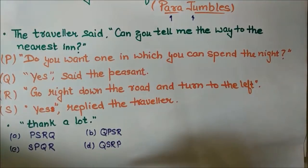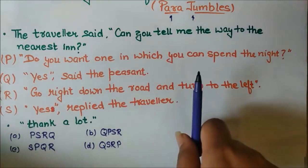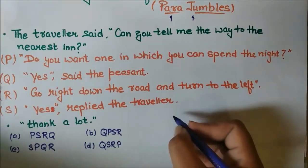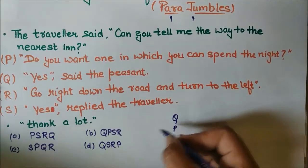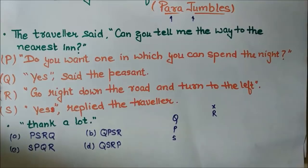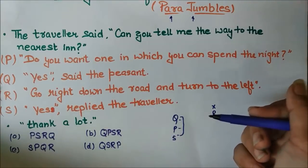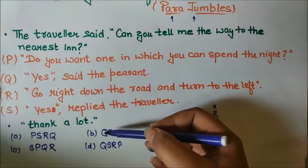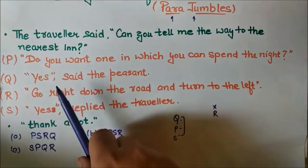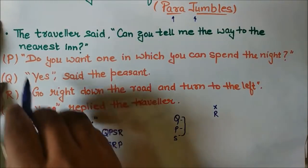Now in this type of question, when you see the question, the first thing you have to keep in mind is: just see the options. Don't just look at the question — first see the options. For example, if two options start from Q, one from P, and one from S, it is very clear that your sequence will not start with R. This process helps a lot because sometimes all four options start from one single letter, so you don't need to try every statement.